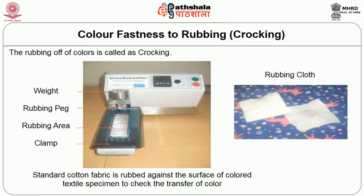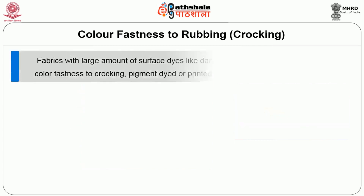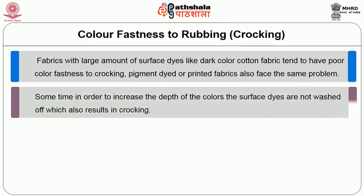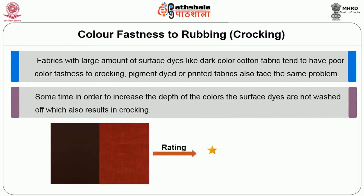Color fastness to rubbing, also called color fastness to crocking, occurs because of frequent rubbing of garments against metallic or wooden parts. The rubbing of color from fabric is called crocking. Fabrics with large amounts of surface dyes, like dark-colored cotton, tend to have poor color fastness to crocking. Sometimes, in order to increase color depth, surface dyes are not fully washed off after dyeing — the unfixed color then strips from the fabric during rubbing.